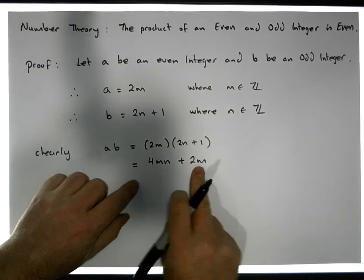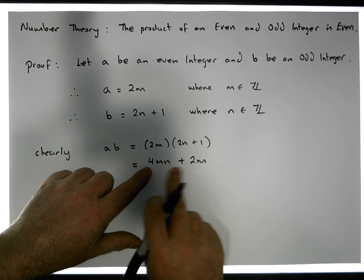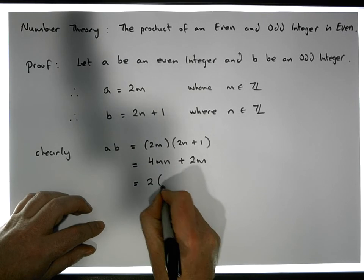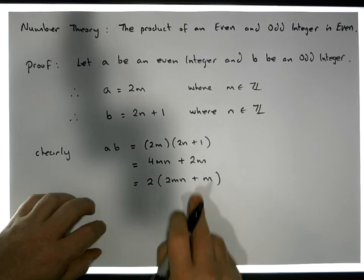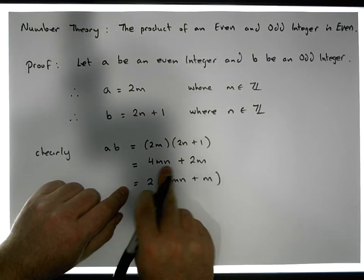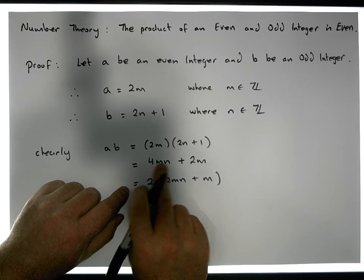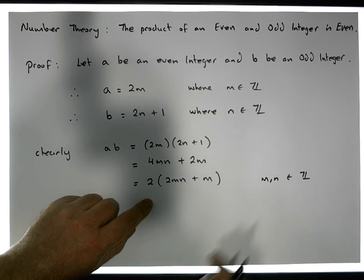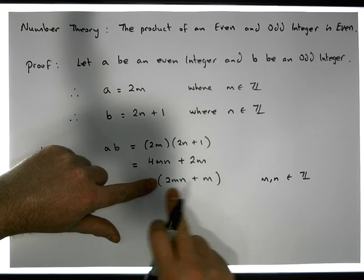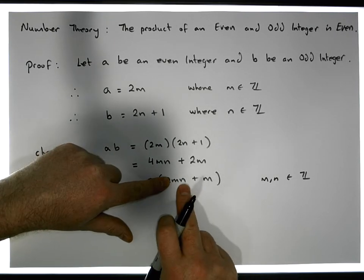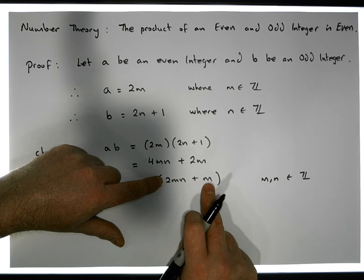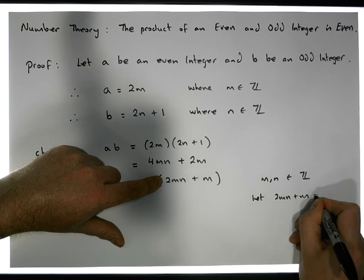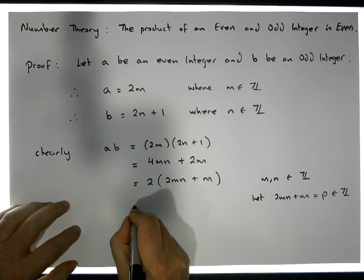Now we can take out 2 as a common factor, so this becomes 2 times (2mn + m), since 2 divides into 4mn and 2 divides into 2m, where m and n are elements of the integers. This number 2mn + m is an integer, because the product of two integers is an integer, and the sum of integers is an integer. So let 2mn + m equal p, which is clearly an integer.